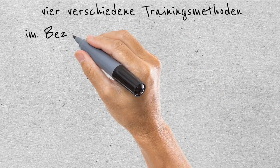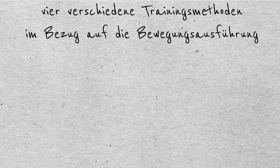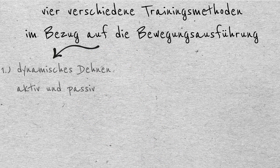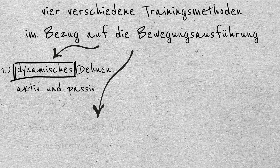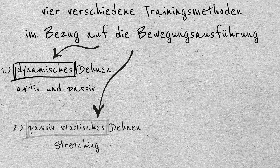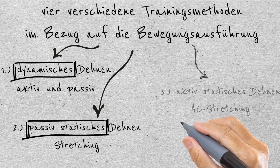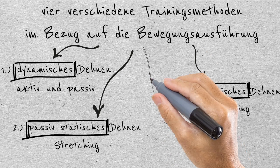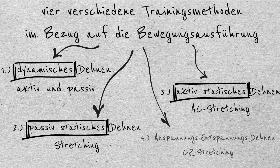In Bezug auf die Bewegungsausführung lassen sich grundsätzlich vier verschiedene Trainingsmethoden der Beweglichkeit unterscheiden: Dynamisches Dehnen (aktiv und passiv), Passiv-statisches Dehnen (Stretching), Aktiv-statisches Dehnen (AC-Stretching), Anspannungs-Entspannungs-Dehnen (CR-Stretching).